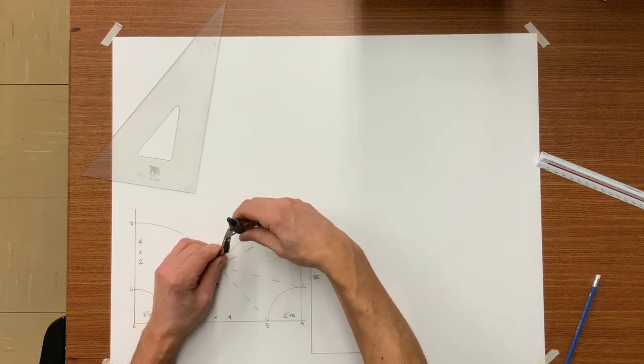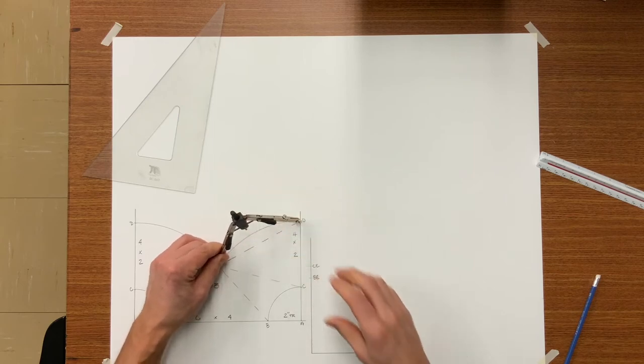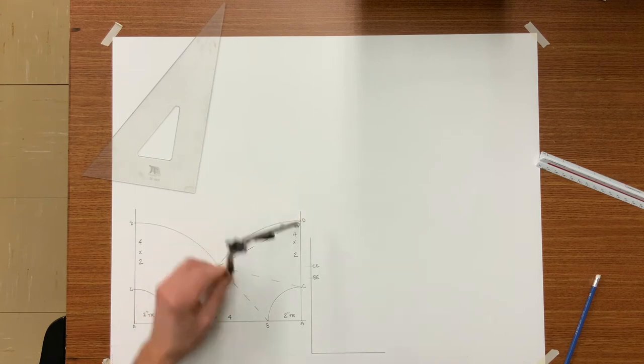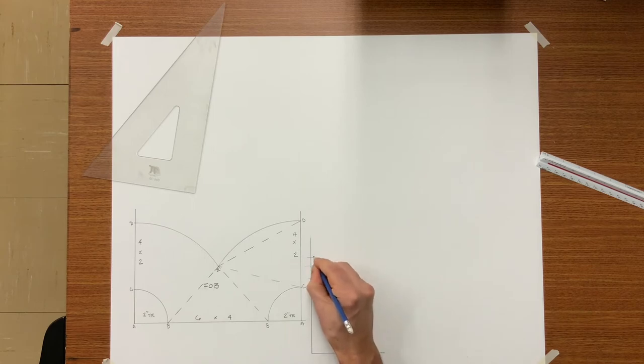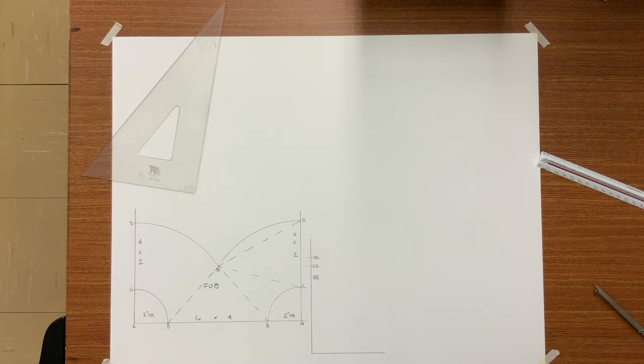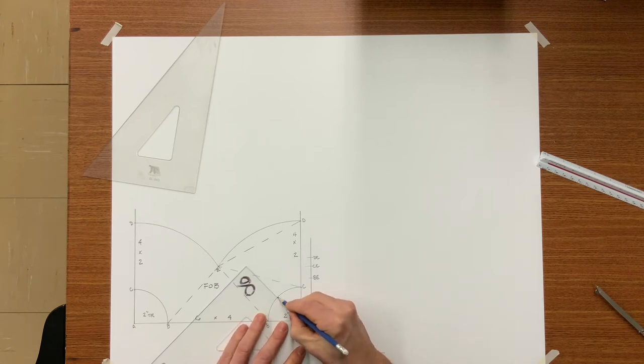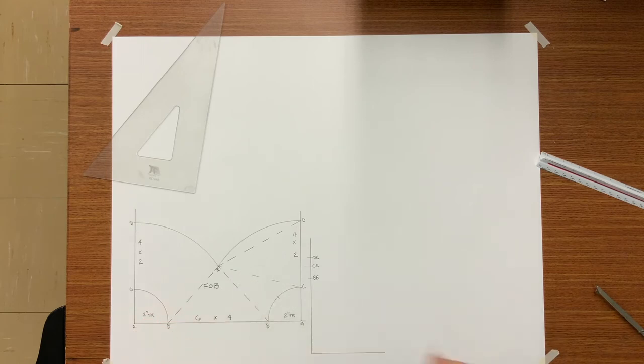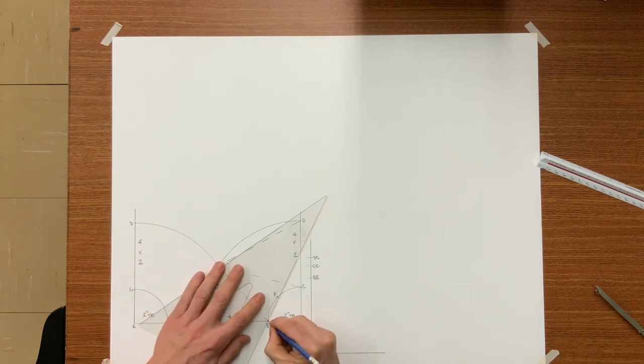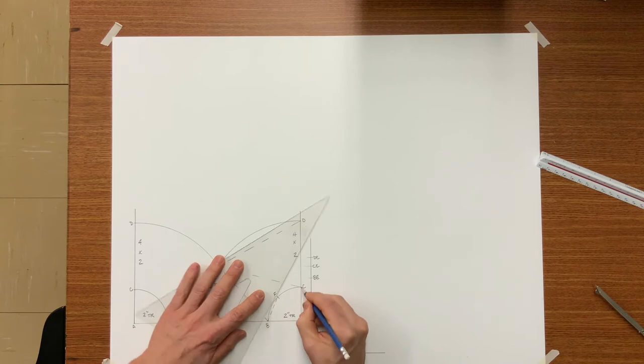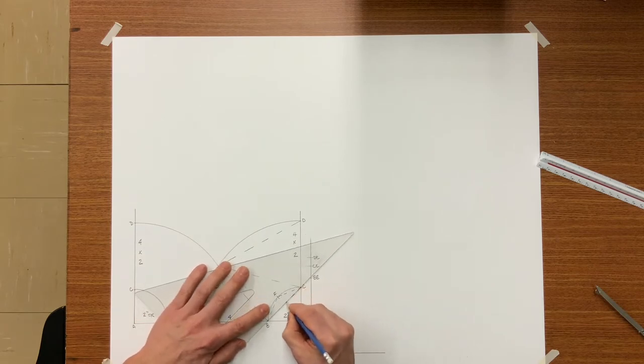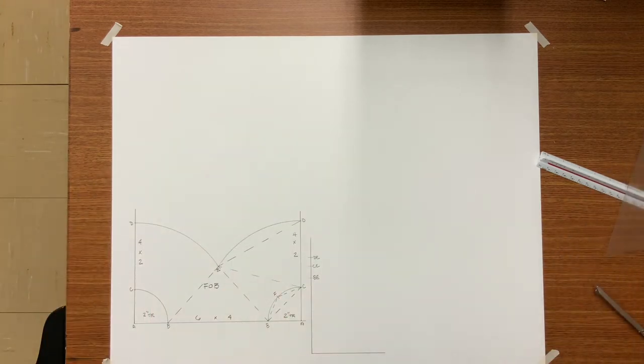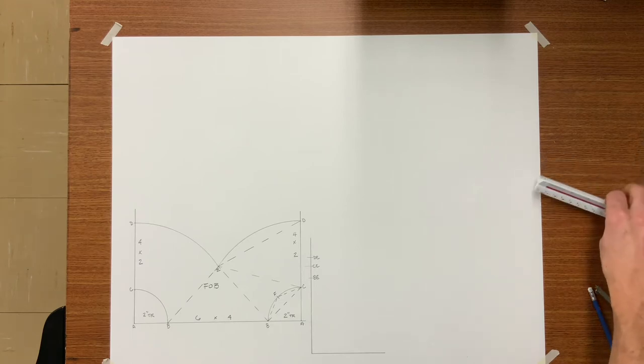Do the same thing with C, E and also D, E. Now I must find point F, and in order to find point F I'm going to bisect the throat. I will also put in my element lines.